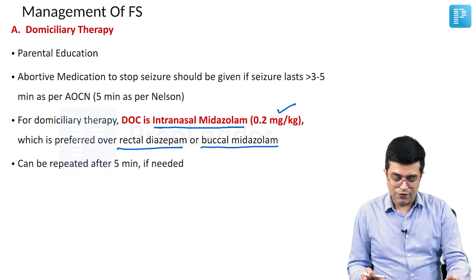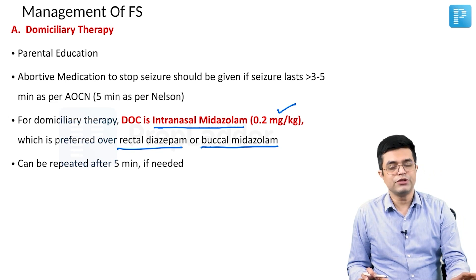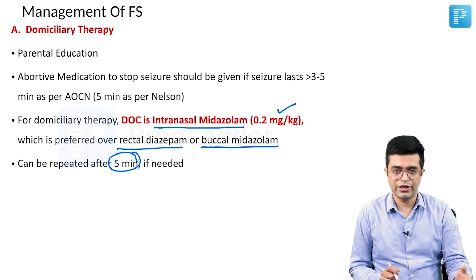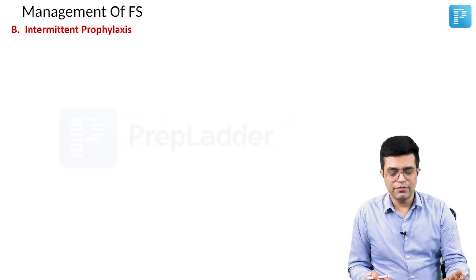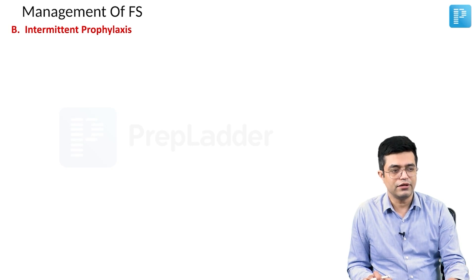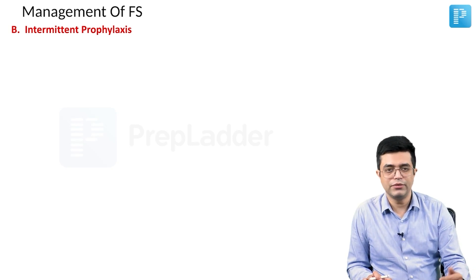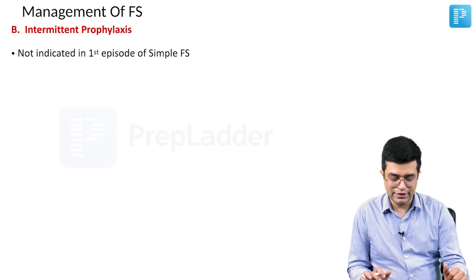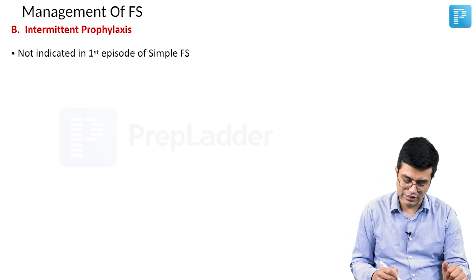Once a dose has been given, you can repeat it after 5 minutes if needed, and urgent medical attention should be sought if the seizure is not aborted. Intermittent prophylaxis is indicated where parents are staying far from medical facilities and the child is likely to have multiple seizure episodes. It is not indicated in the first episode of simple febrile seizure — this is a very important point.